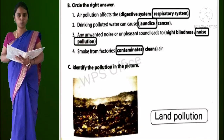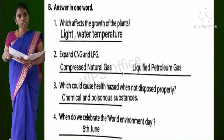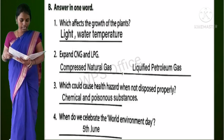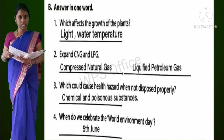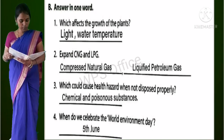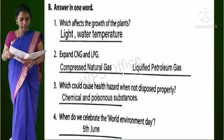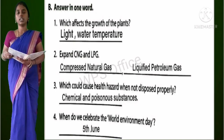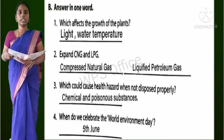Worksheet 2, Section B: Answer in one word. First question: Which affects the growth of plants? Light, water, temperature. Second: Expand CNG - Compressed Natural Gas. Expand LPG - Liquefied Petroleum Gas.